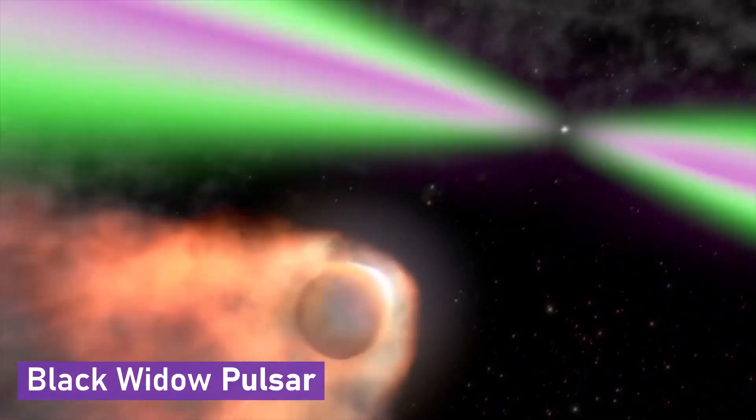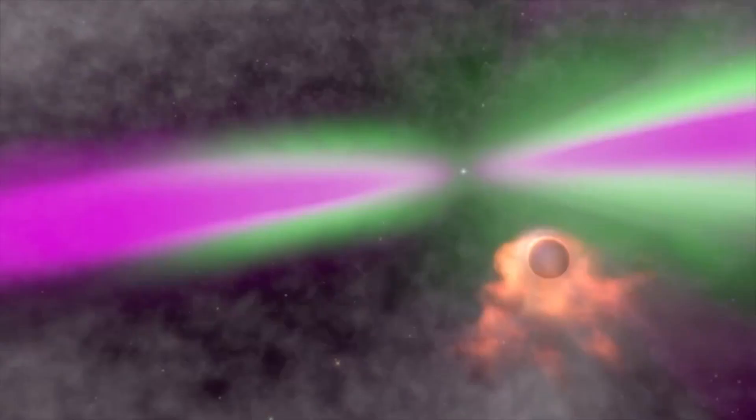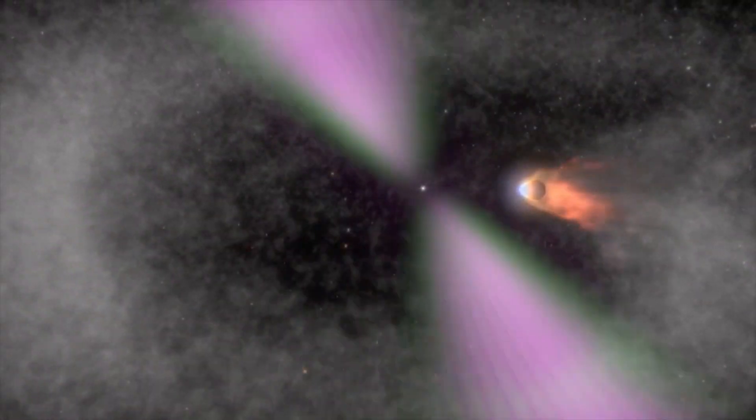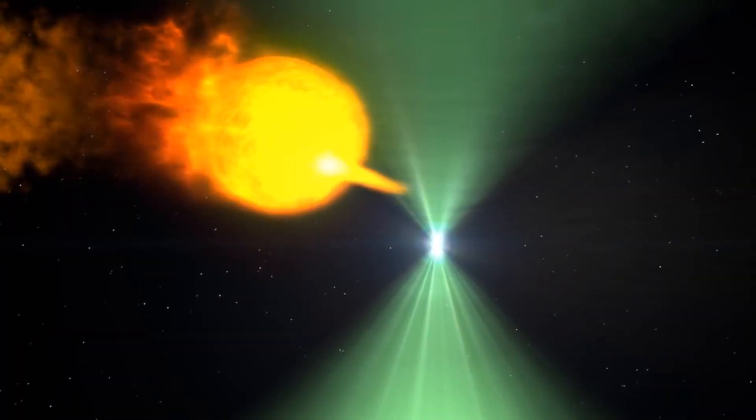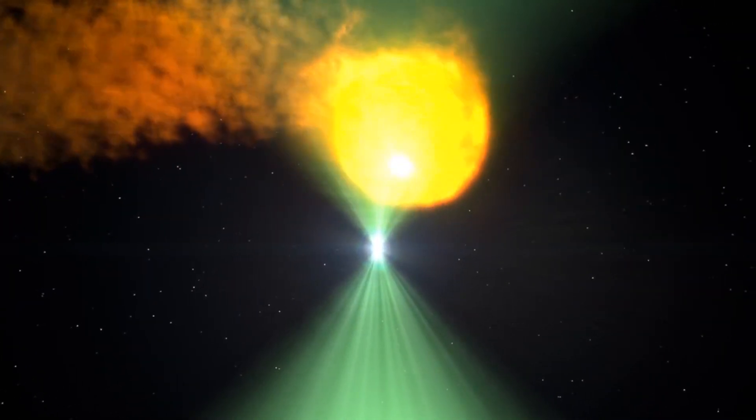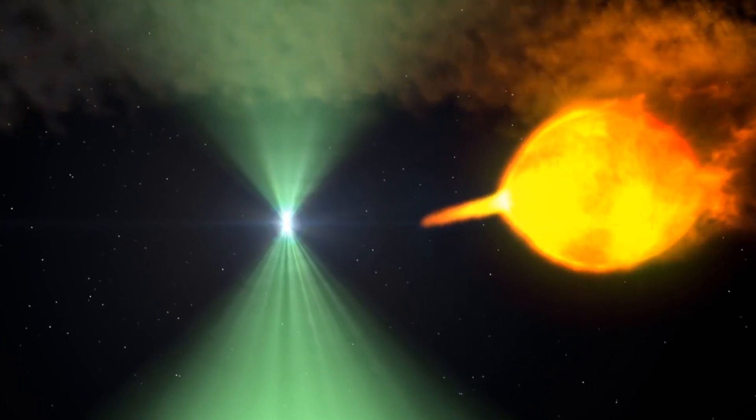The Black Widow pulsar feels exactly the same as if the spider that gives it its name were consuming its mate. It is a brown dwarf star, not very massive, but the more material the pulsar eats, the more slowly it rotates. Its companion star will gradually fade away as a result of the energy that it will lose during the process.